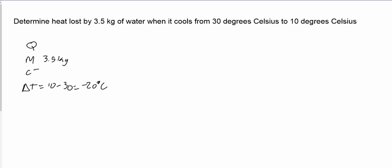And we're also told it's water. And so since it's water, that means its specific heat is 1 kilocalorie per kilogram degree Celsius. So now we just use Q equals MC delta T.